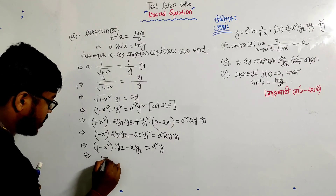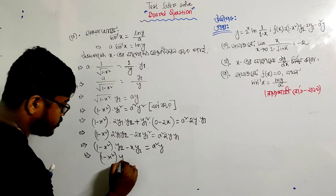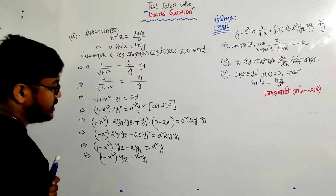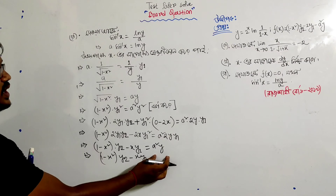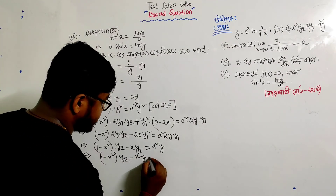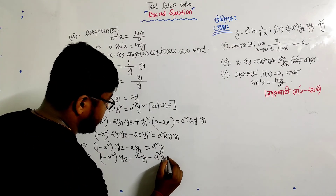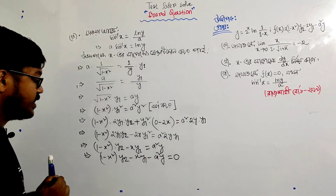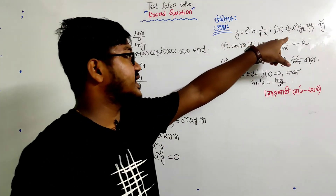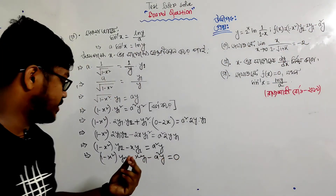So: 1 minus x squared into y₂ minus xy₁ minus a squared y equals 0. So if y minus x₀ and y minus x is 0, the final differential equation is 1 minus x squared times y₂ minus xy₁ minus a squared y equals 0.